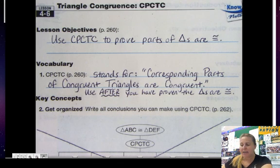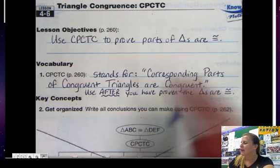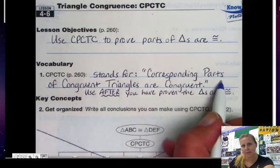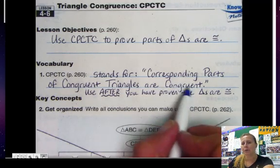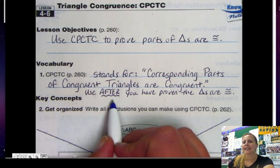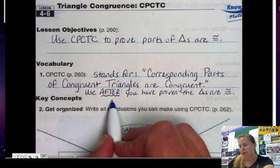Our objective today is to use CPCTC to prove parts of triangles are congruent. CPCTC stands for corresponding parts of congruent triangles are congruent. And you use this after you have proven the triangles are congruent.